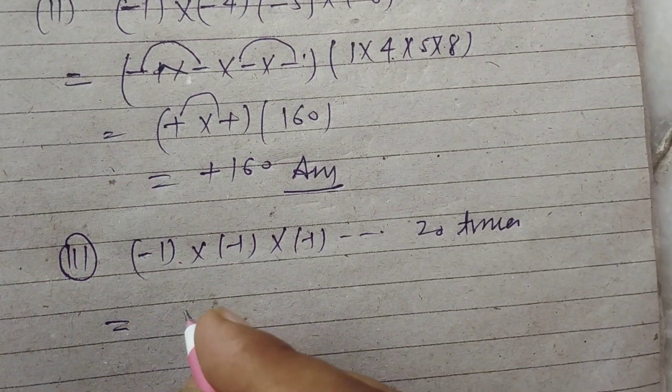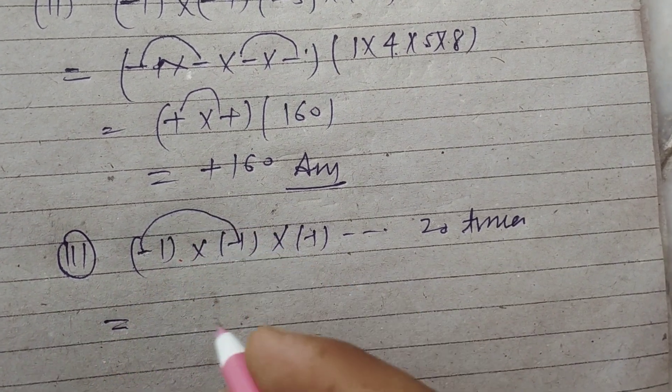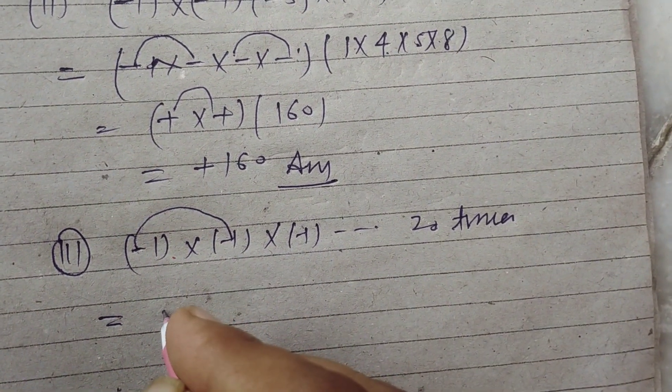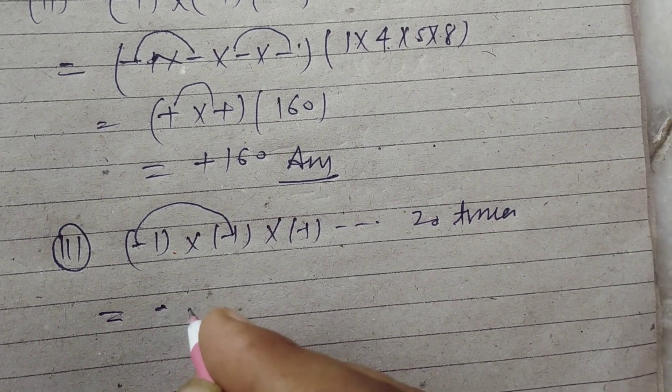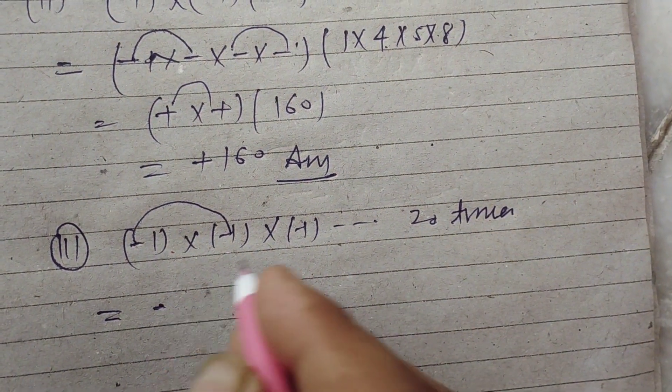When we multiply two negatives, we get positive. So two minuses become positive. Therefore,